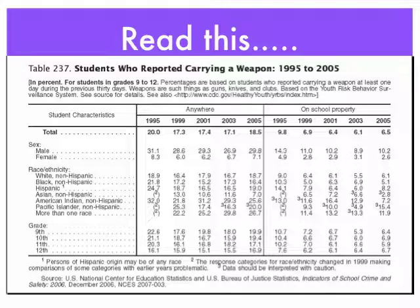So if we were to read this, once again coming from the other example: 29.8% of the students who reported carrying a weapon in 2005 were male. And to be a little more specific, that 29.8% said they were carrying a weapon anywhere. When it came down to students who reported carrying a weapon on school property, only 10.2% of male students indicated they were carrying a weapon on school property. You can see there are some differences there, and that's subject to interpretation — we'll discuss that in class, or you can ask me or email me.